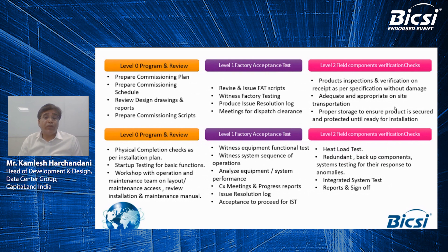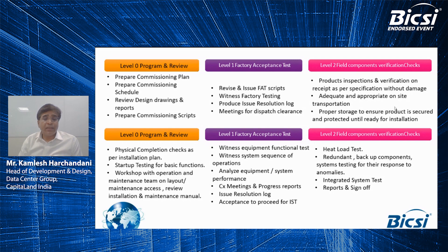I wanted to touch upon what we do at the last leg of execution — testing and commissioning. These are the steps we generally follow: at Level 0, we create a script for testing and commissioning; at Level 1, we carry out a factory acceptance test; at Level 2, we make sure that the equipment received at site is verified as per our specification requirement. What is also important is Level 3, Level 4, and Level 5, which finally talks about the commissioning of the data center with ISAT.